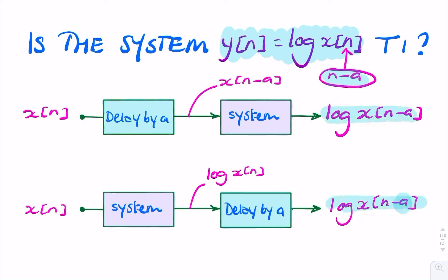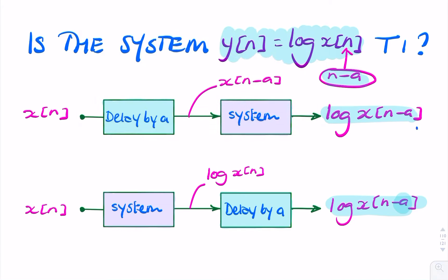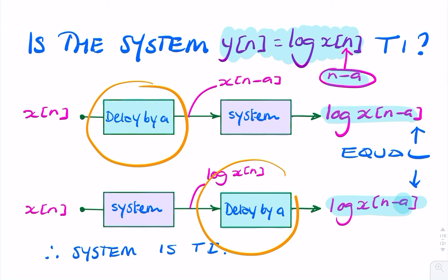And if we look at these two expressions, they're identical. And that is the condition for time invariance. So these two, they're equal. And we can conclude that the system is time invariant, because applying the delay before or after the system hasn't made a difference.